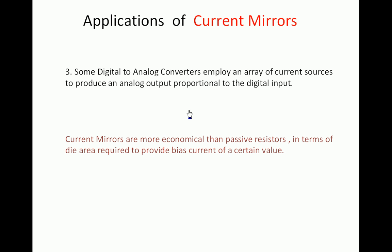Another application: some analog-to-digital and digital-to-analog converters use an array of current sources to produce an analog output proportional to digital input. A/D and D/A converters internally use current mirrors. Importantly, current mirrors are more economical than passive resistors in terms of die area required to provide a bias current of a certain value — the same current value can be achieved with a current mirror using much less area.